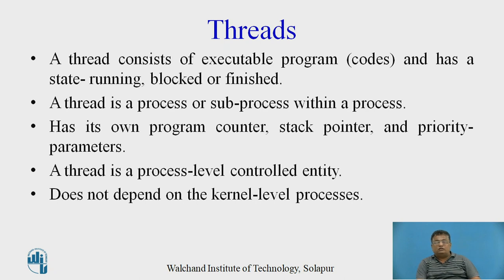The next component is called threads. A thread consists of executable program code and has a state: running, blocked or finished. A thread is a process or sub-process within a process. Threads have their own program counter, stack pointer and priority parameters. A thread is a process-level controlled entity and does not depend on the kernel-level process. So a thread can be called a lightweight process.